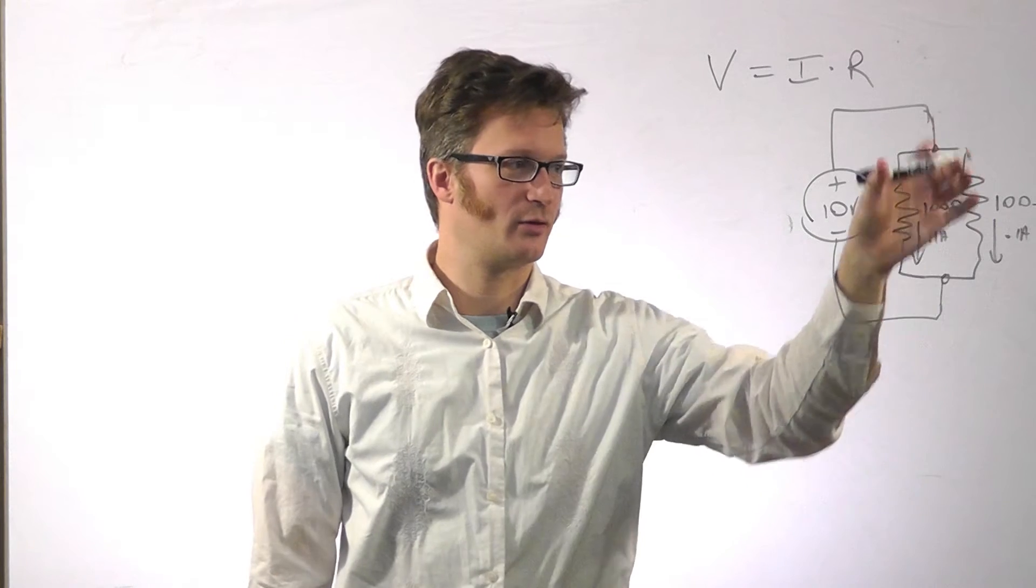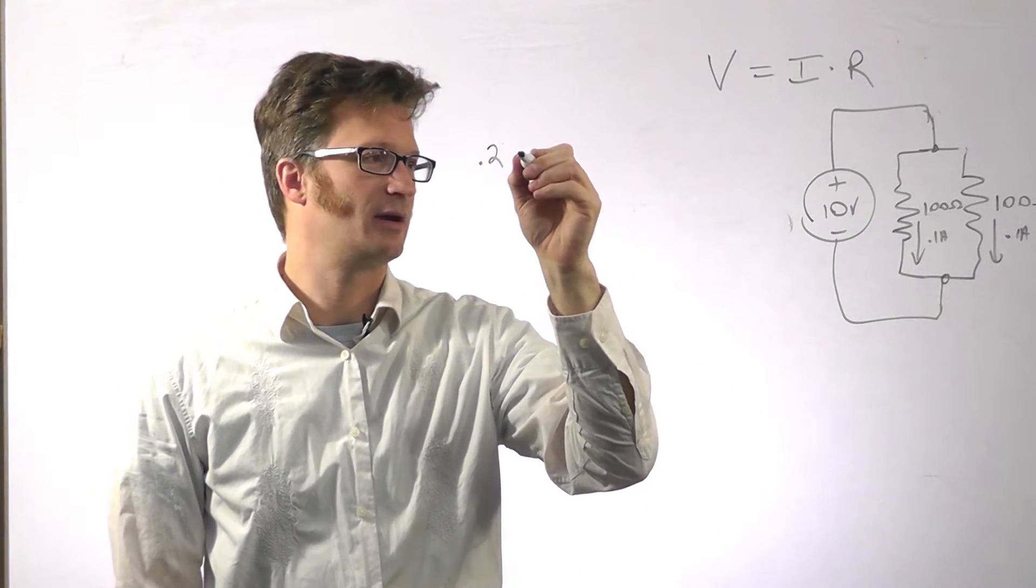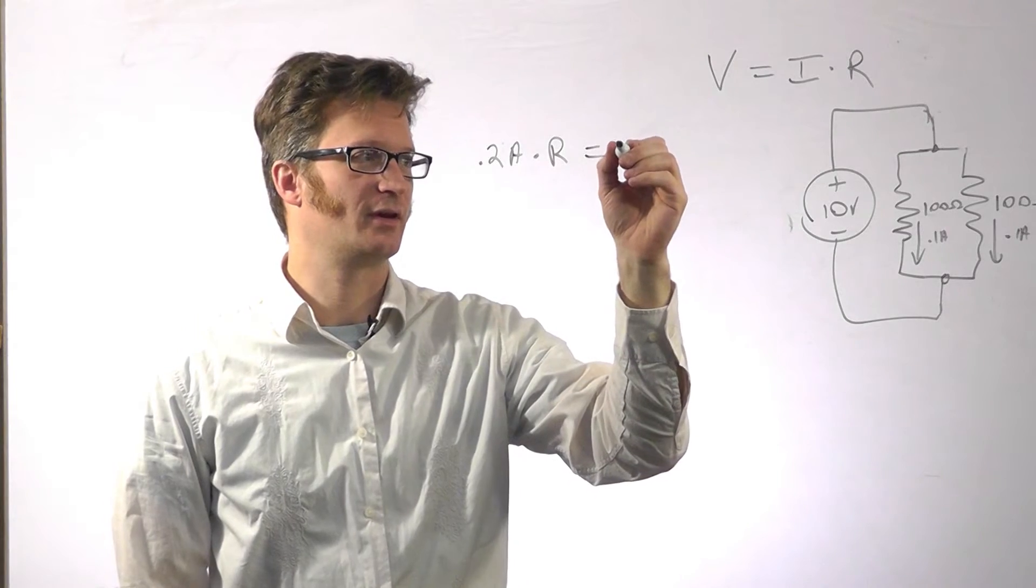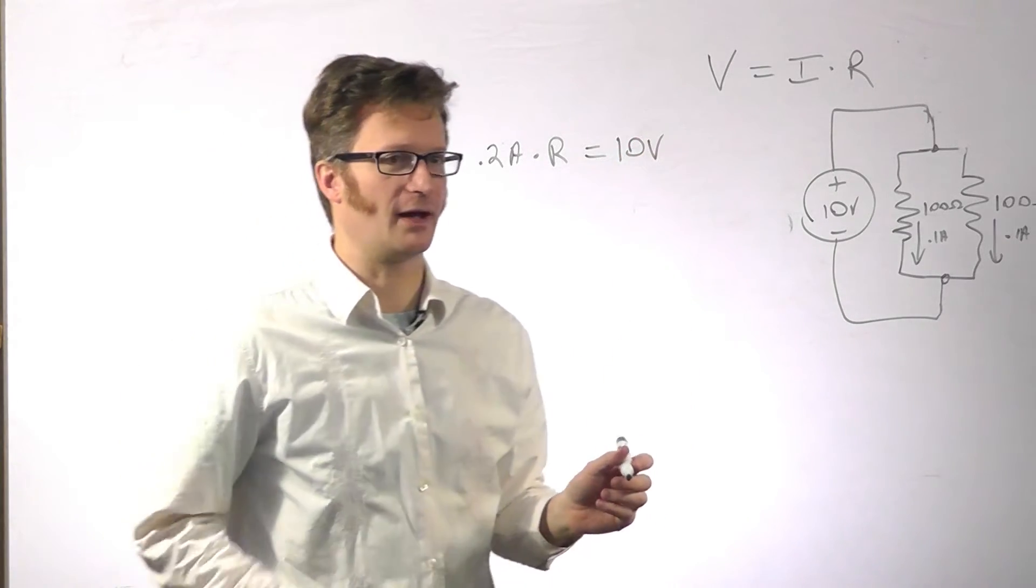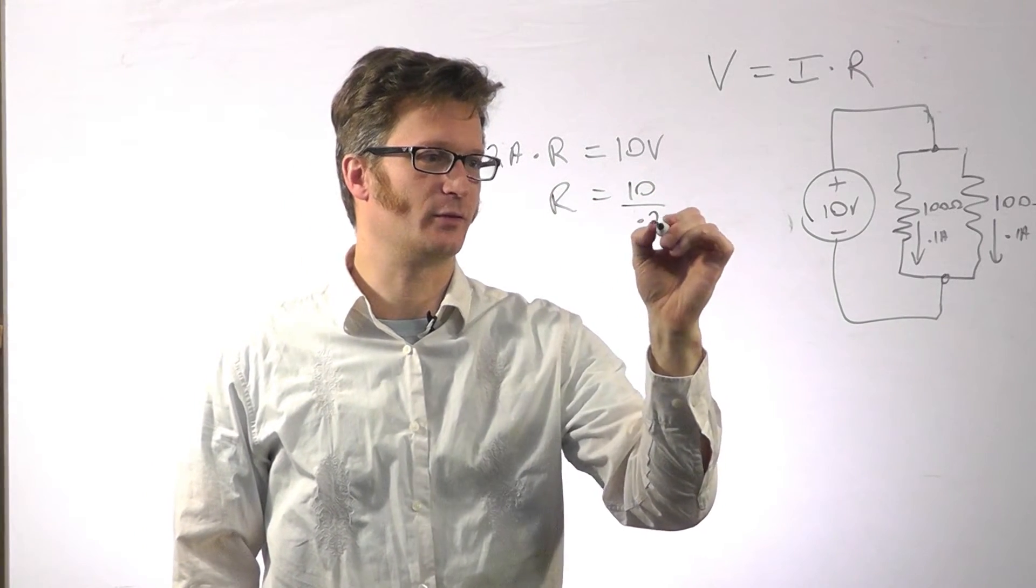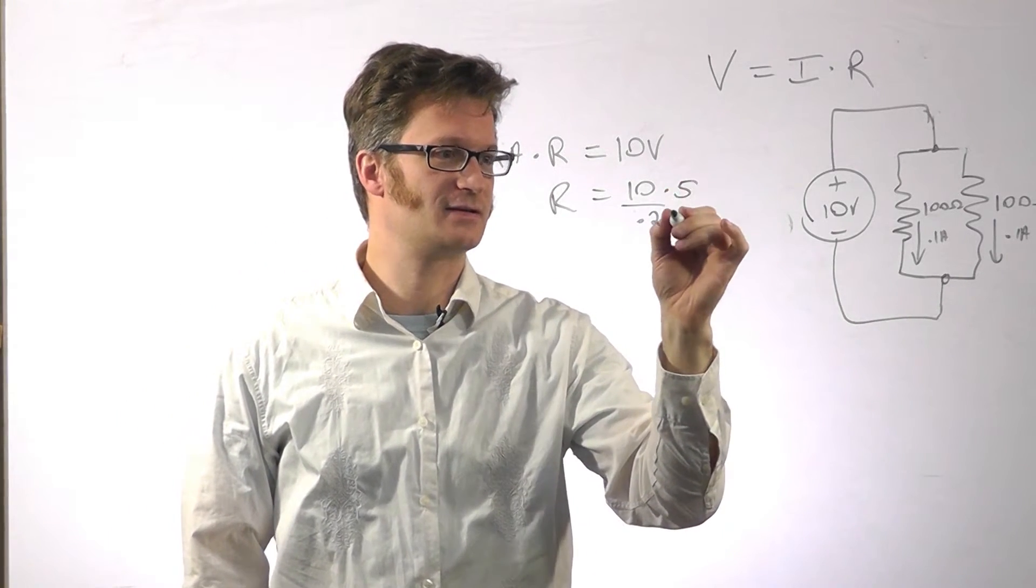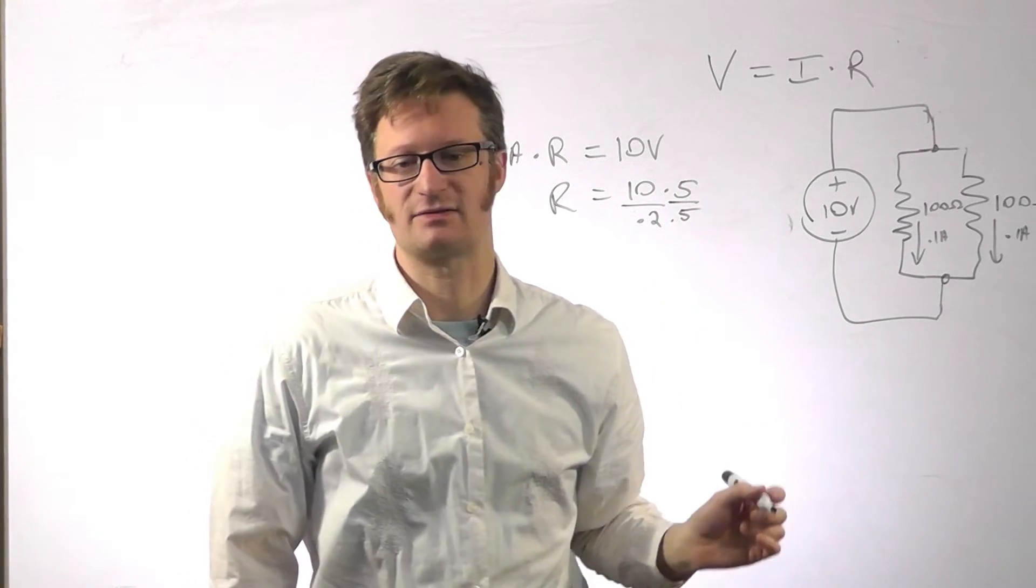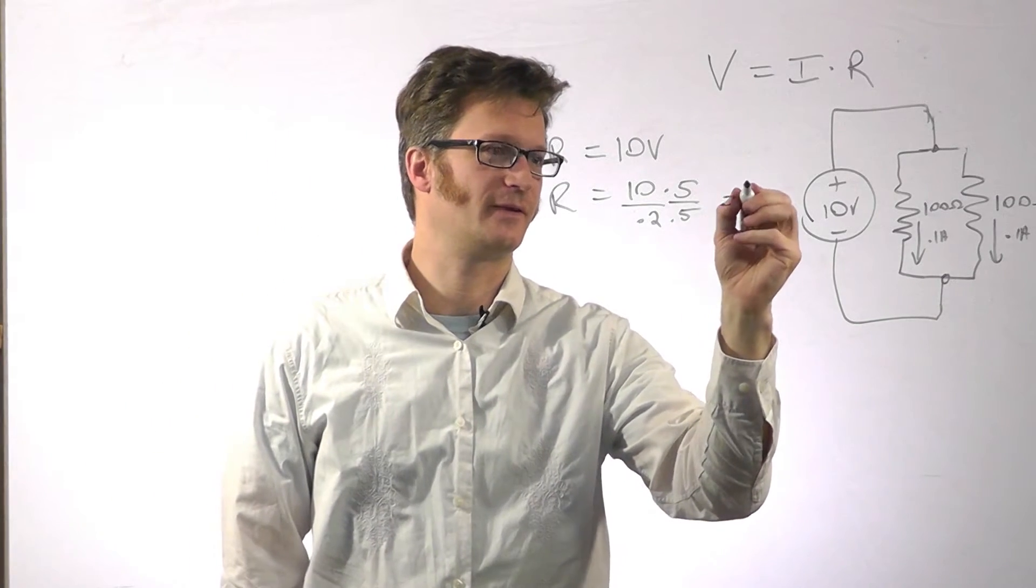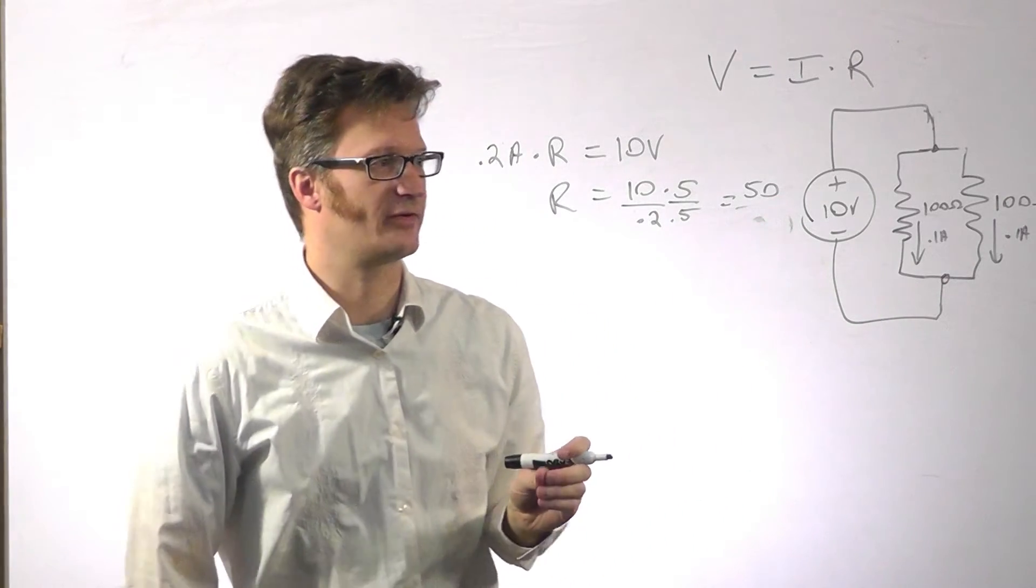And so now to figure out what our total resistance is, 0.2 amps times an unknown resistance equals 10 volts. And R equals 10 divided by 0.2. And to get quickly to our answer, if we multiply each, this is essentially multiplying by 1. 0.5 over 0.5 is 1. That equals 50 over 1, which is just 50. So our resistance is 50 ohms.